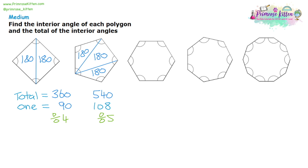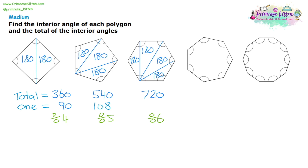Moving on to the hexagon, we start with one corner and join it to the other corners — every single line from that same corner — giving us the minimum number of triangles. We've got a 180-degree triangle at the bottom, 180 on the left, 180 on the right, and 180 at the top. So we do 180 times four triangles, giving us 720 degrees. It's a six-sided shape, so we divide by six. 720 divided by six gives us 120 degrees for one angle. If you've got a protractor, all these are drawn to scale so you can confirm the correct sizes.